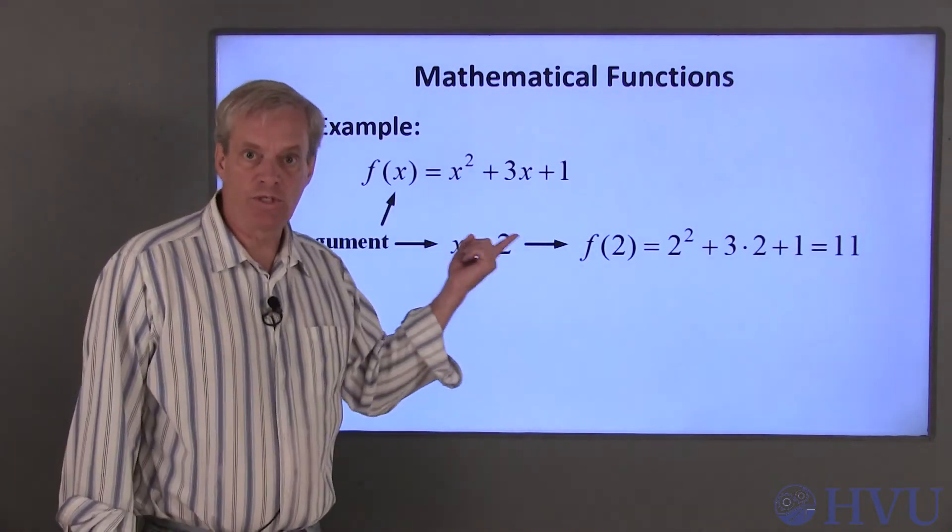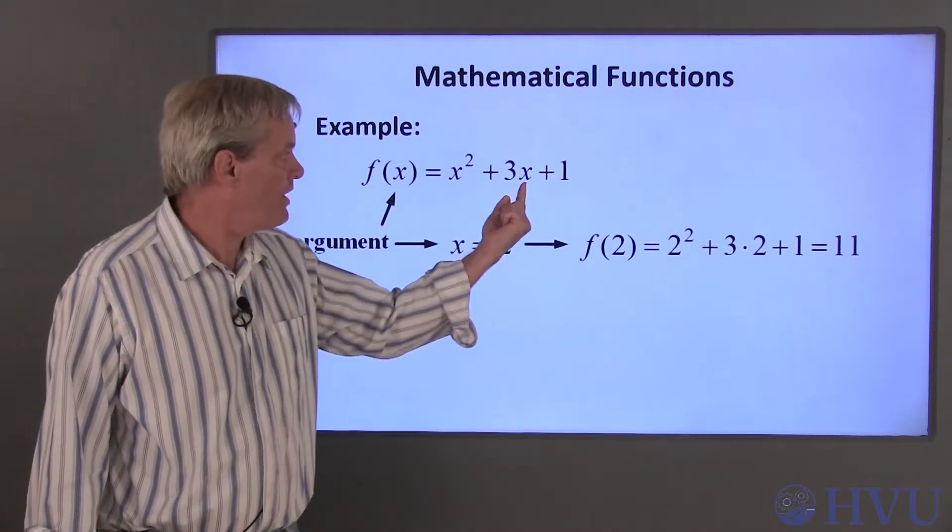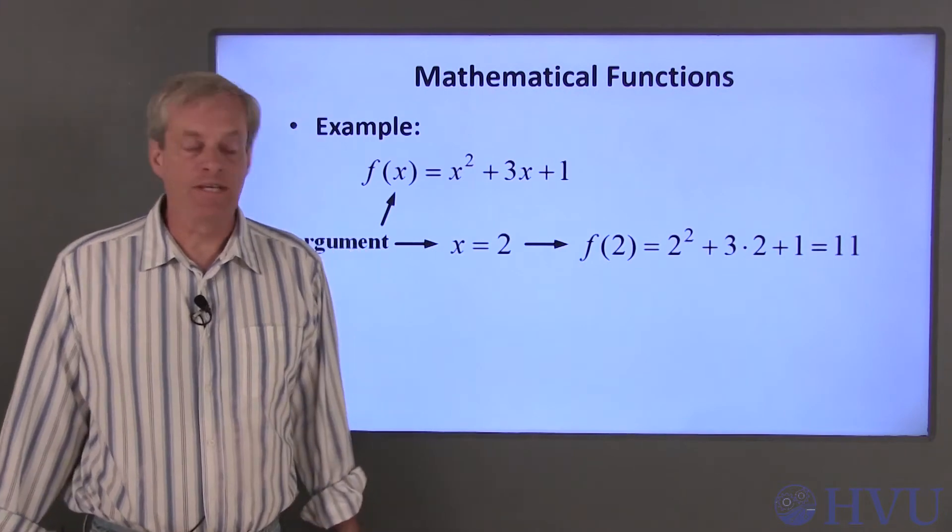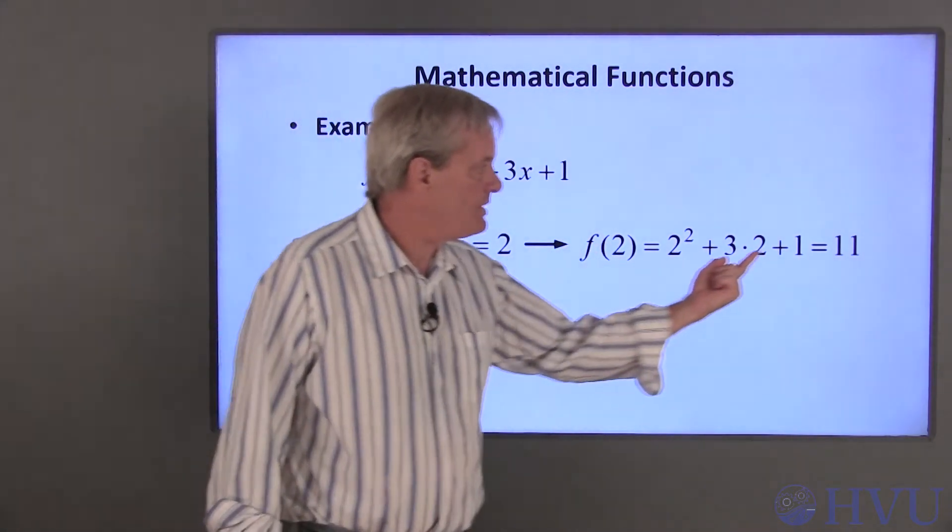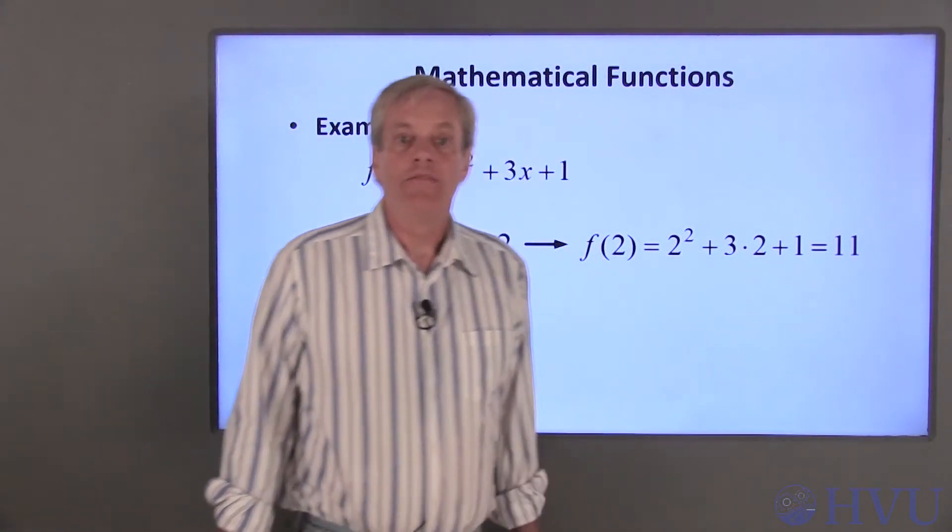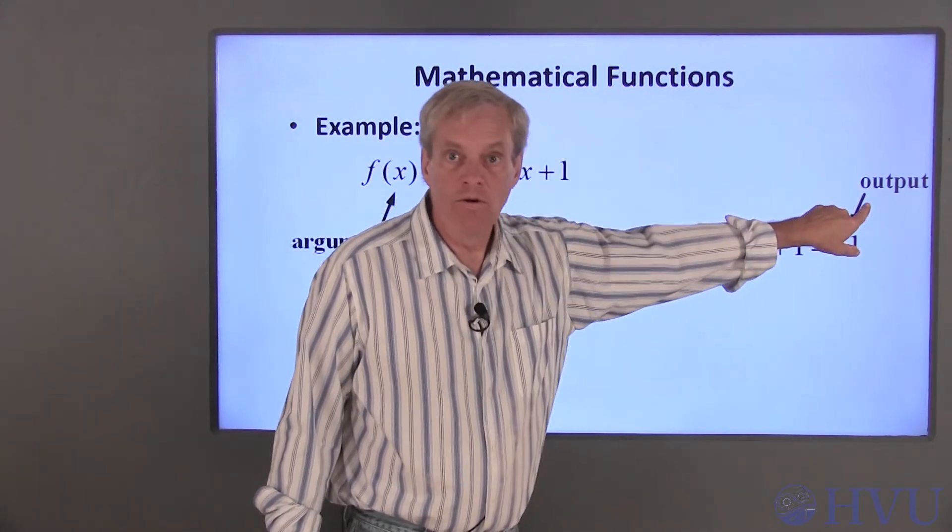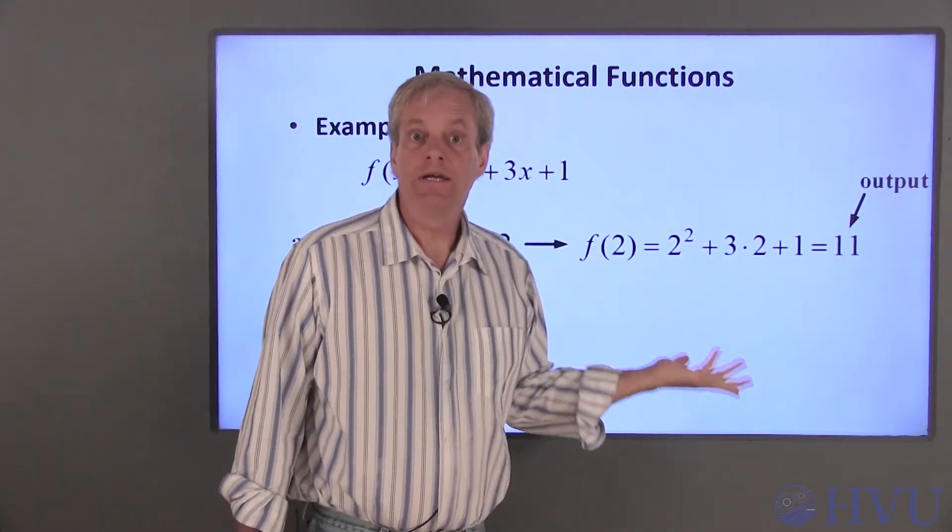For example, to evaluate f for x equals 2, just substitute 2 for x, perform the arithmetic, and get f(2) = 11. The output of the function when x is equal to 2 is 11.